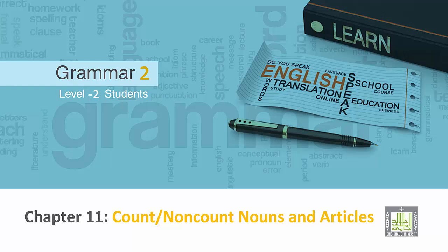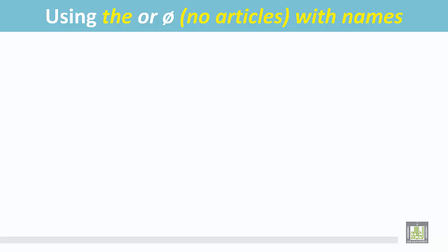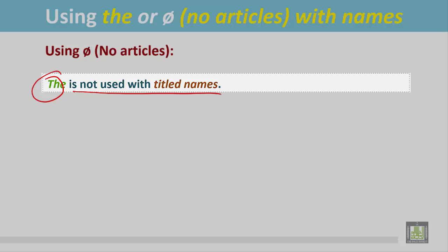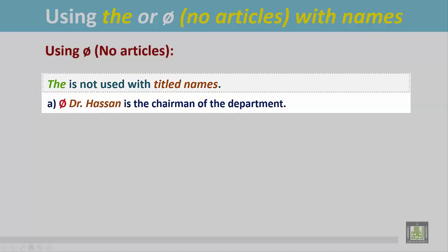Grammar 2 for Level 2 students, Chapter 11: count or non-count nouns and articles — using 'the' or no article with names. Using no articles: 'the' is not used with titled names. For example, 'Dr. Hassan is the chairman of the department.' Doctor is the title, and there is no article before it. Similarly, there is no article before titles like President.